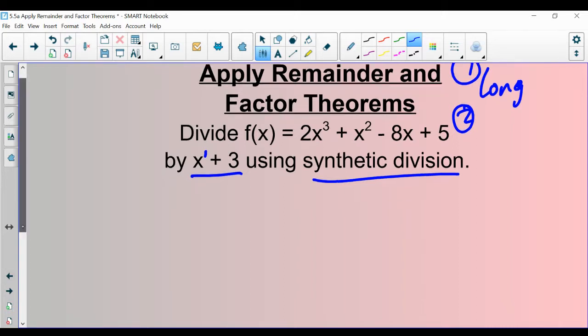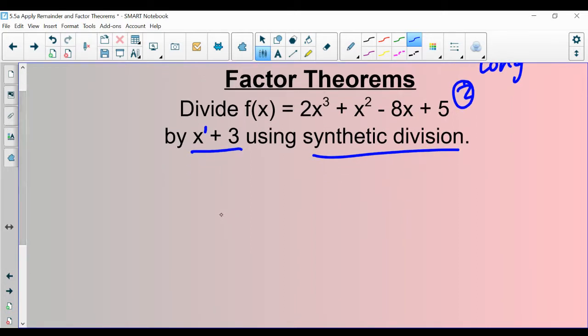In this problem, the setup is different with synthetic division. Instead of putting your divisor on the outside, you're actually going to put what makes your divisor zero on the outside. So notice that this is x plus three. What would you plug in for x to make this zero? That would be negative three.